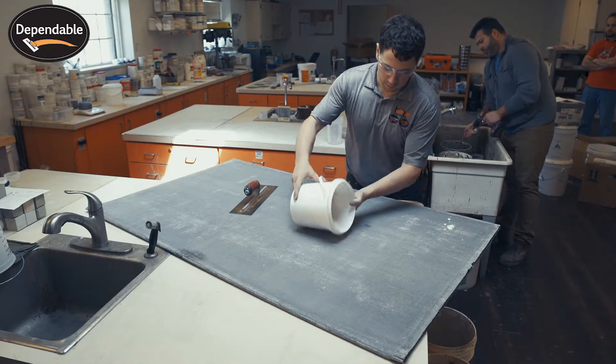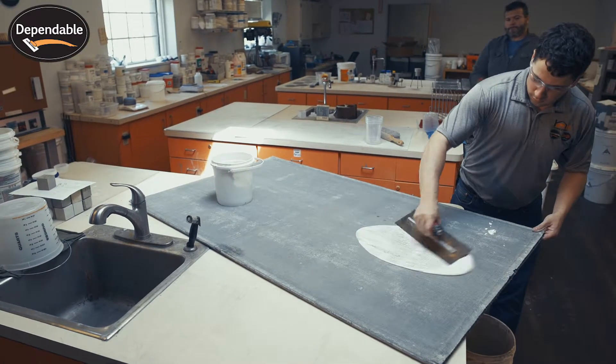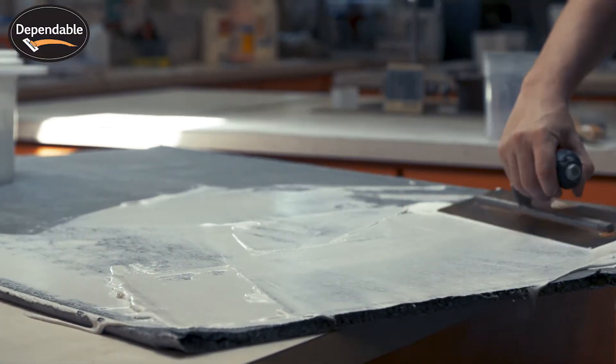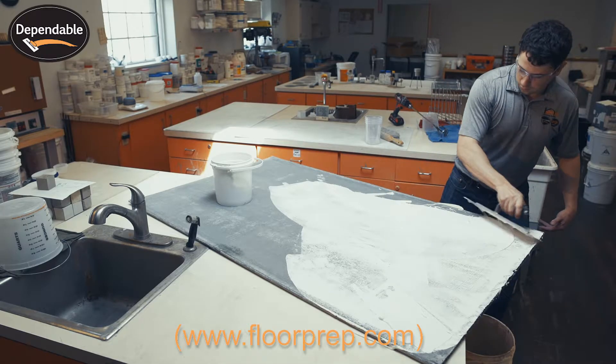When embossing over vinyl or other flooring is necessary, mix Polyskim with Dependable's Acrylic Embossing Additive as instructed on the Polyskim data sheet.